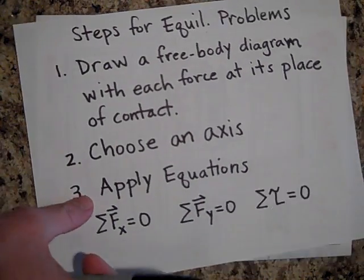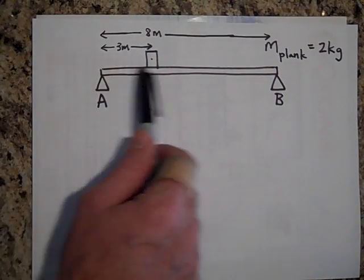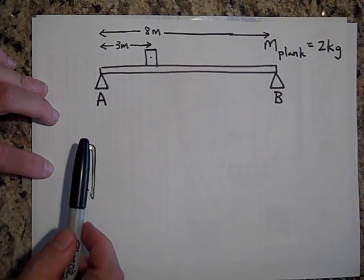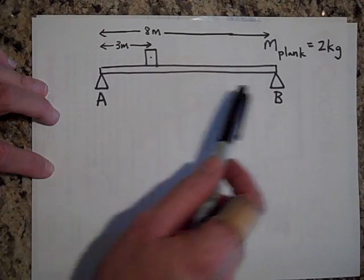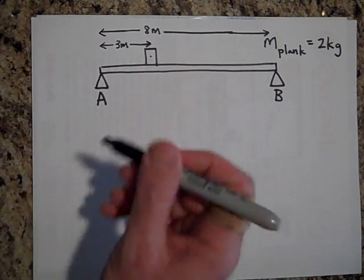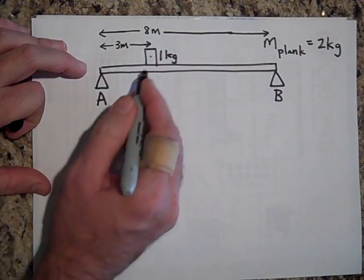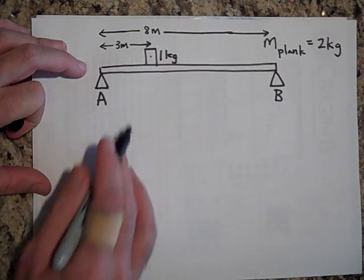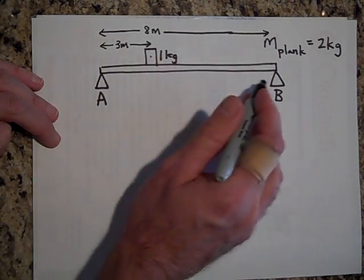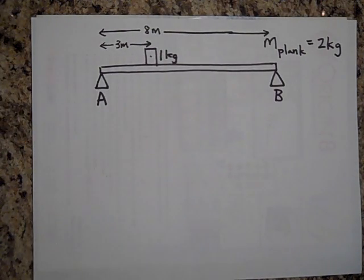Okay, let me show you how this works. Then let's say we have a plank that has a mass two kilograms and it's being supported by two supports, support A and support B. And there's a one kilogram object that is three meters from this edge. And what we'd like to know is what will be the force from each of these fulcrums if it's just remaining motionless?